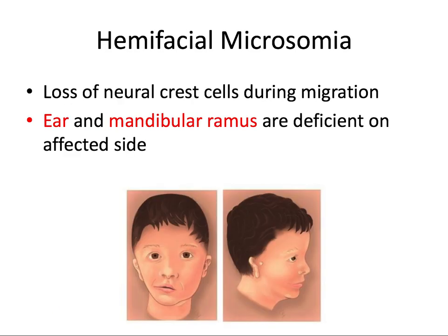Hemifacial microsomia is a loss of neural crest cells for some unknown reason during their migration. Notice how all of these first few syndromes involve neural crest problems, so we're very early on in the developmental process. The external ear, mandibular ramus, and associated soft tissues are deficient on the affected side. The patient's right side has been affected — the mandible has shifted over to that side because the ramus is deficient, and we also have microtia on that affected side.